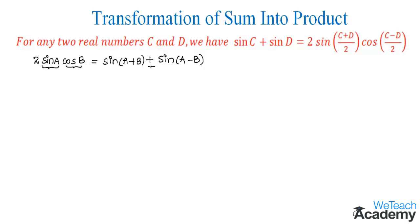The product of two different trigonometric ratios results in the sum of two different trigonometric ratios. Observing the formula of sine c plus sine d, we have the sum of two different trigonometric ratios which results in the product of two different trigonometric ratios. Comparing both formulas, we get the value of a as (c plus d) divided by 2, and the value of b as (c minus d) divided by 2.